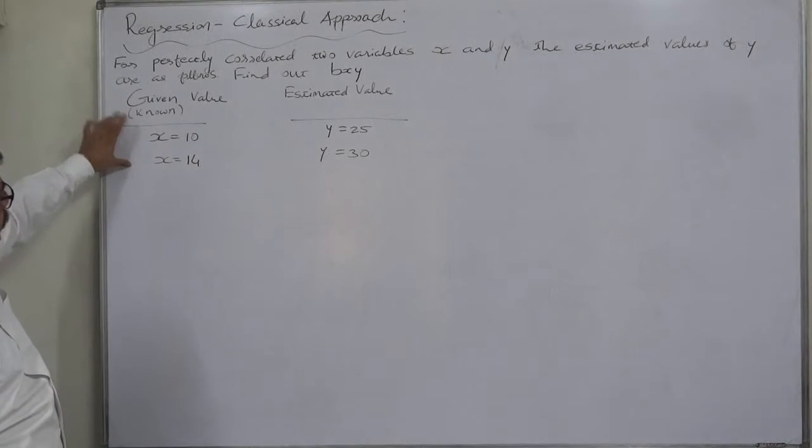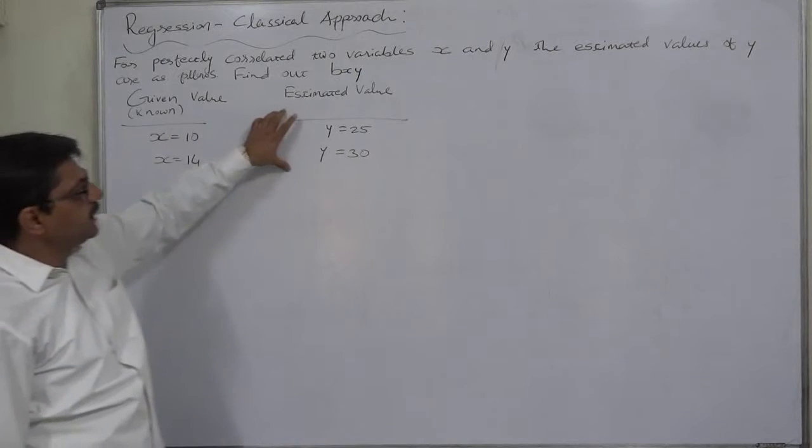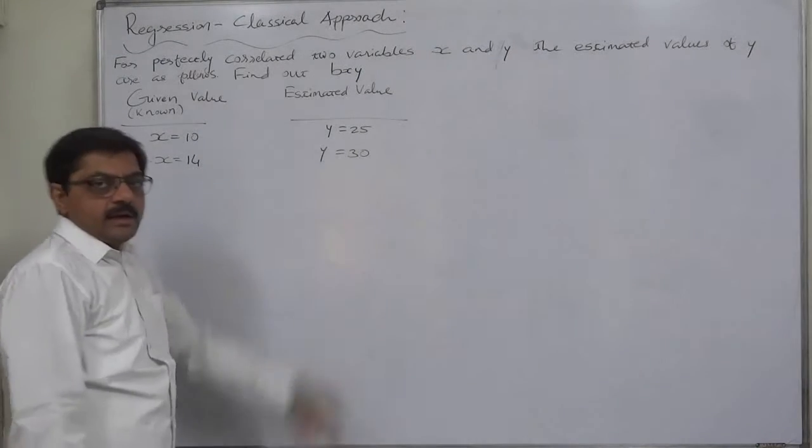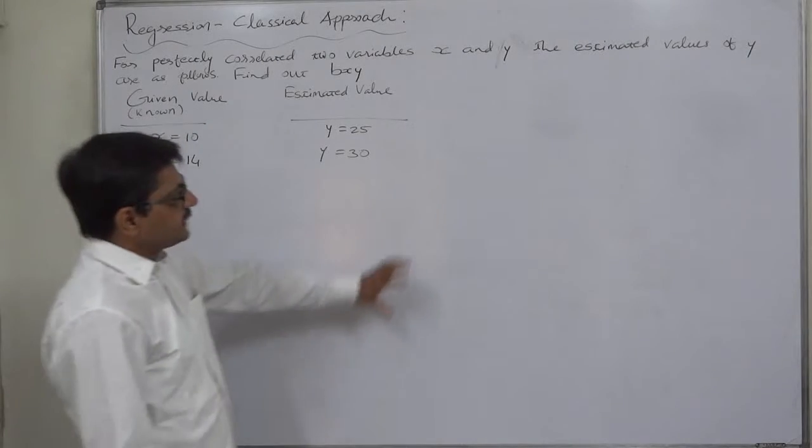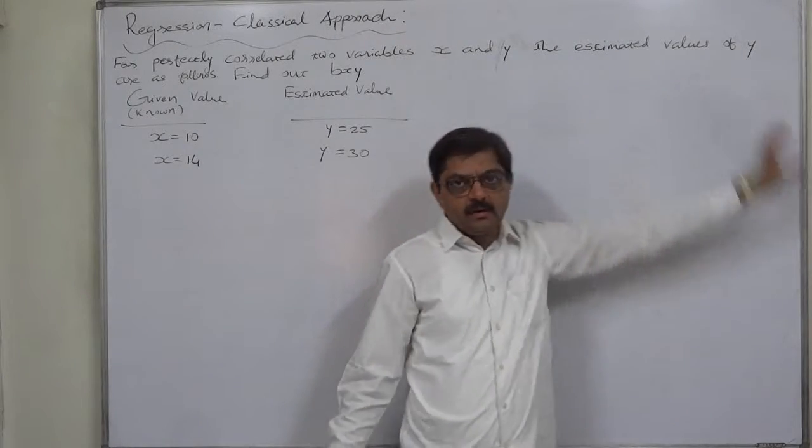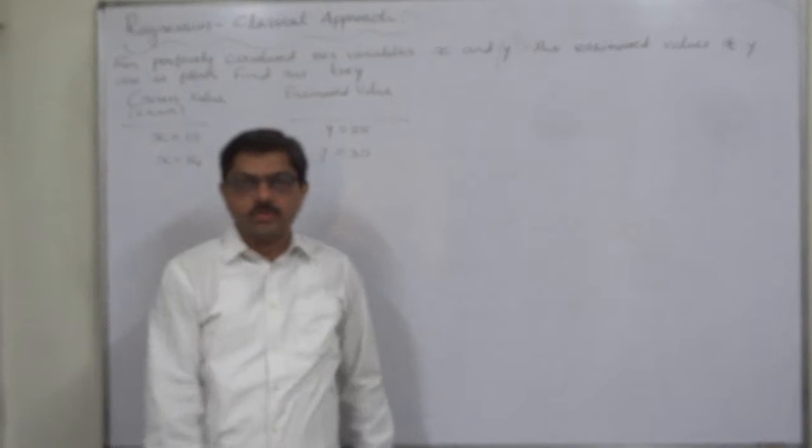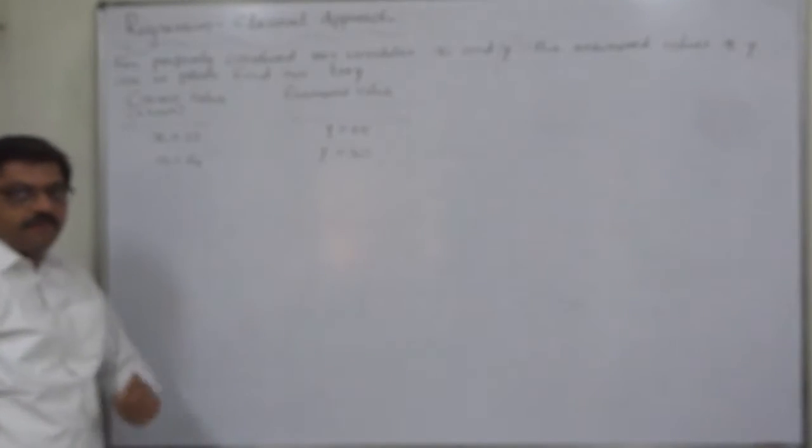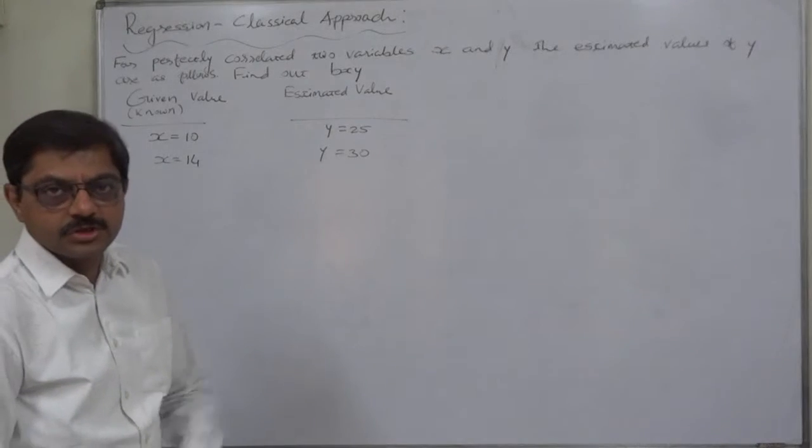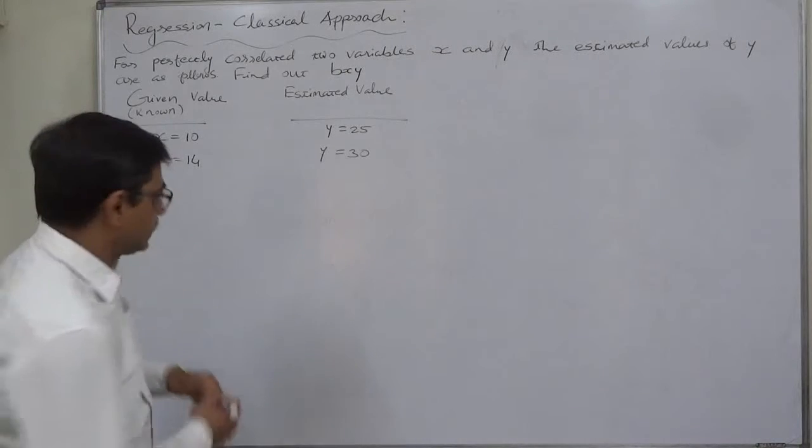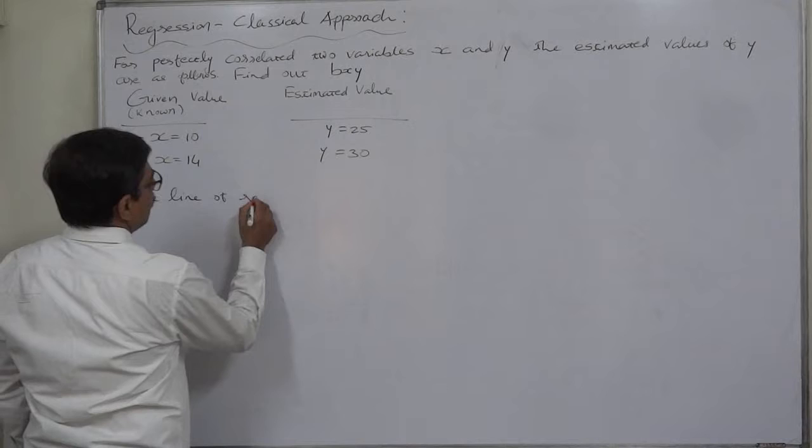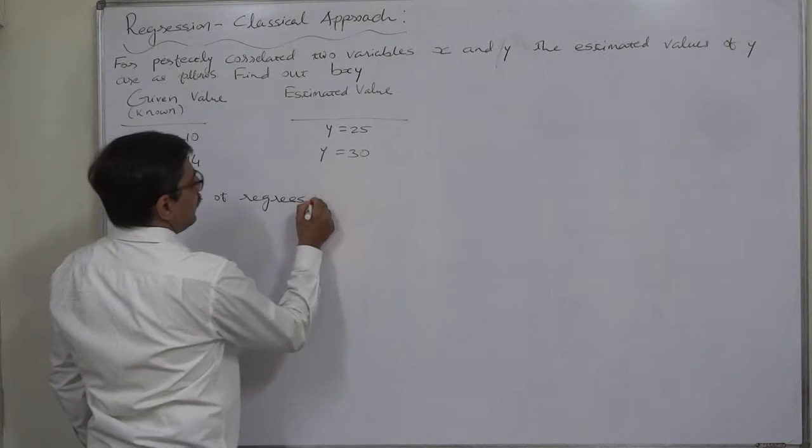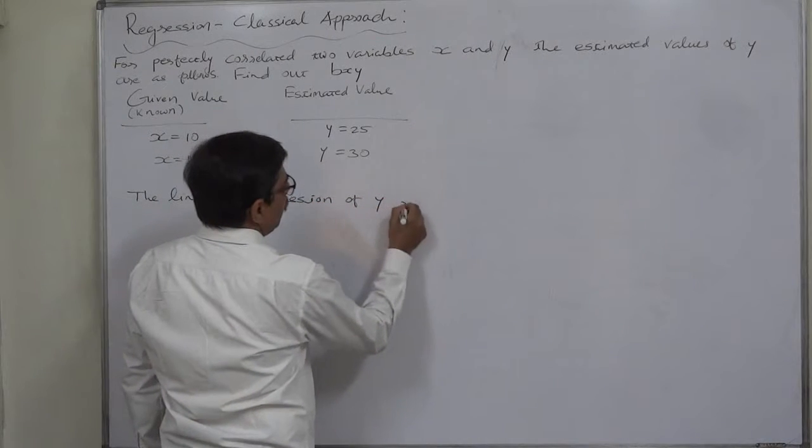Given values or known values of x and estimated value of y. We know very well that we can estimate the values of y on the basis of the known values of x if we have the line of regression of y on x. The line of regression of y on x.